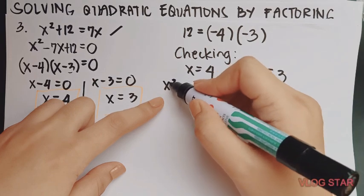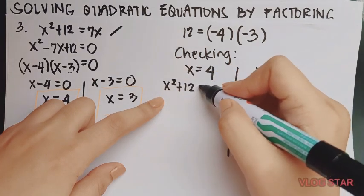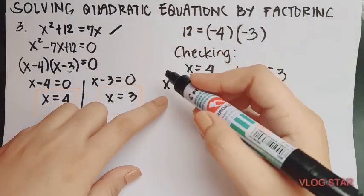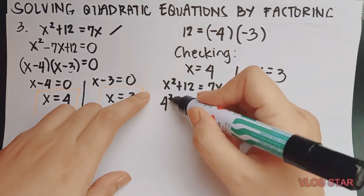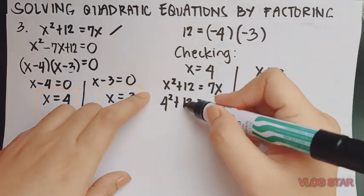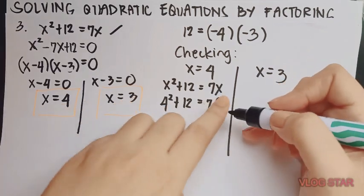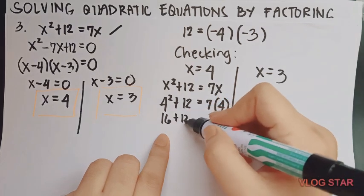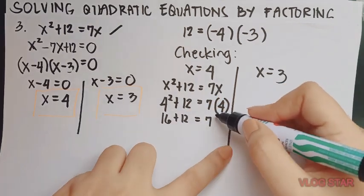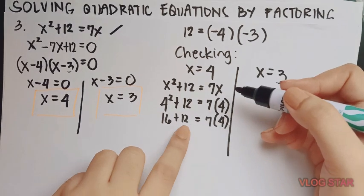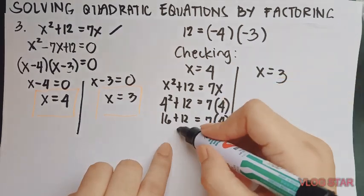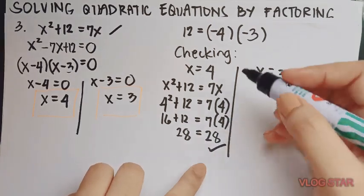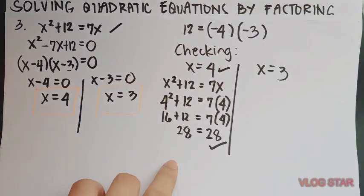So copy the original equation. x squared plus 12 equals 7x. Substitute 4 to x. And this will become 4 squared plus 12 equals 7 times 4. 4 squared is 16 plus 12. Is it equal to 7 times 4? 16 plus 12, this is equal to 28. So this is equal to 7 times 4, which is 28. 28 equals 28 is correct. Therefore, x equals 4 is correct.